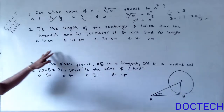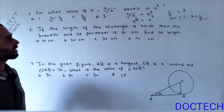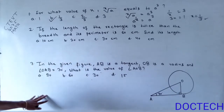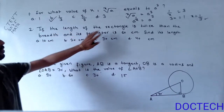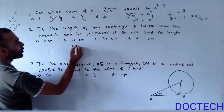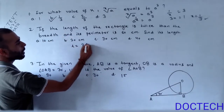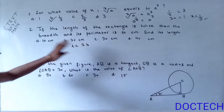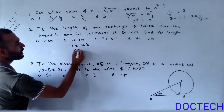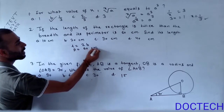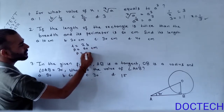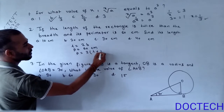In the second question, if the length of the rectangle is twice the breadth and its perimeter is 60 cm, find its length. So, l equals 2b. The perimeter equals 60 cm.